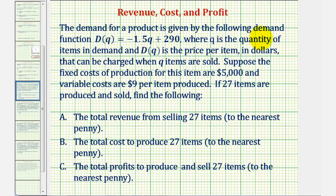The demand for a product is given by the following demand function: D of Q equals negative 1.5Q plus 290, where Q is the quantity of items in demand and D of Q is the price per item in dollars that can be charged when Q items are sold.